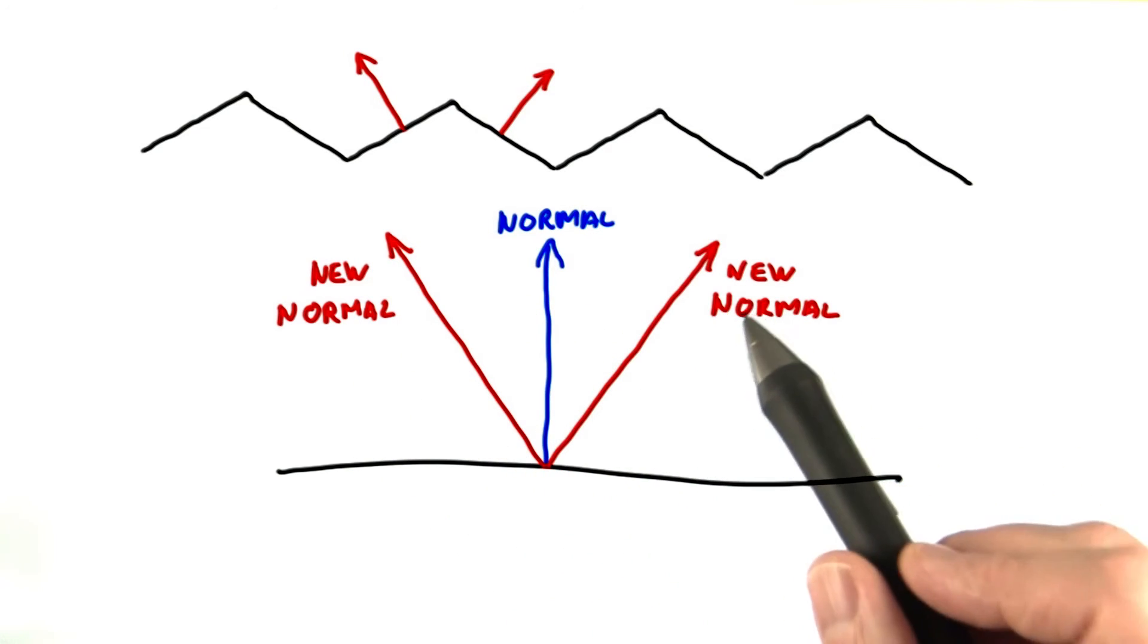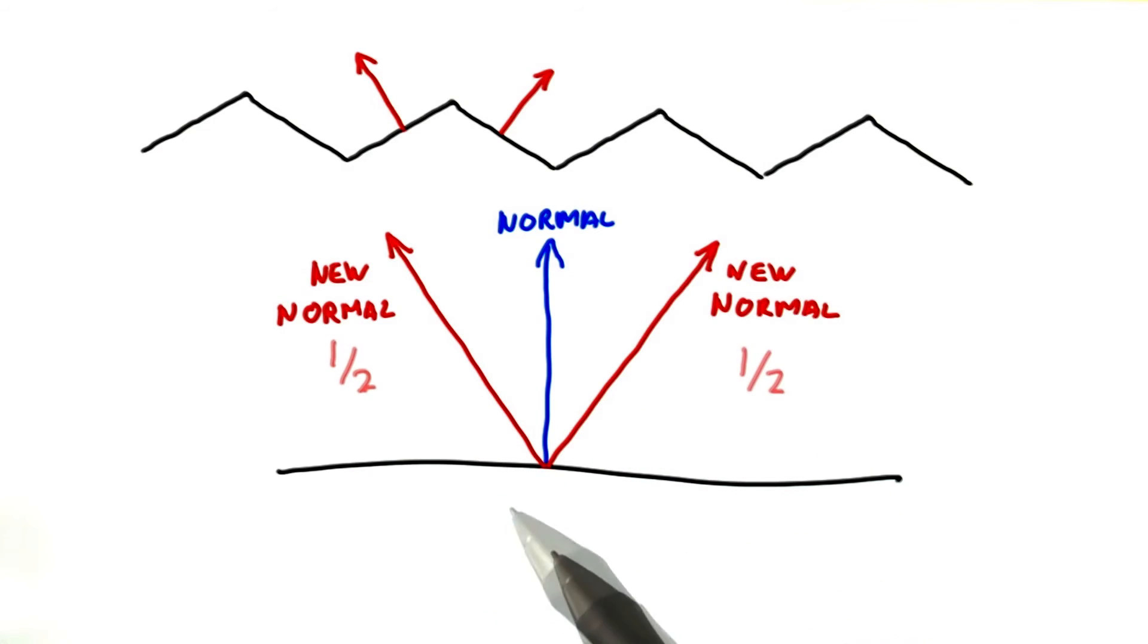Basically, you need to apply the reflection model twice, once to each normal. To keep things about the same intensity, make both of these contributions each just half as strong.